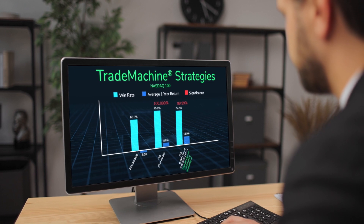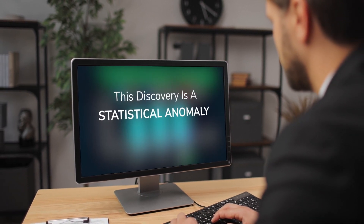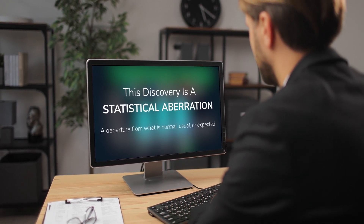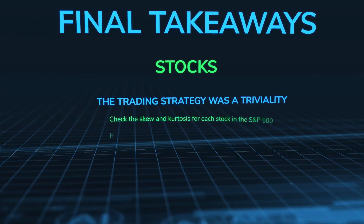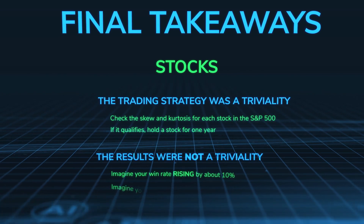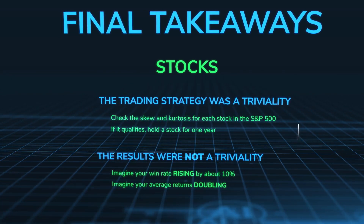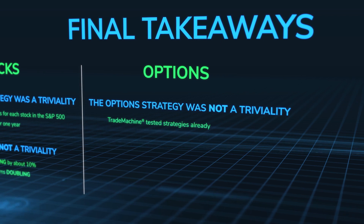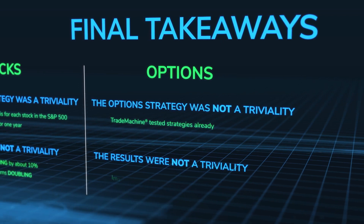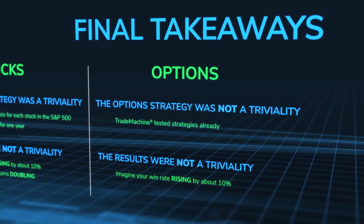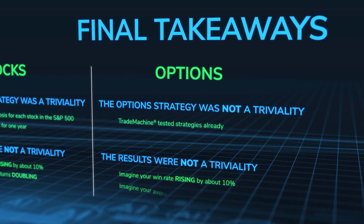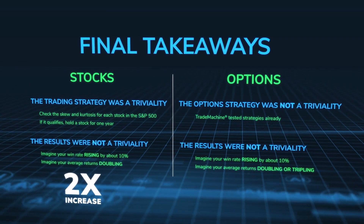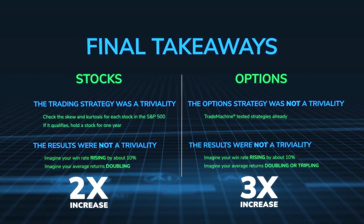This is the second time in my 25-year career that I've seen what can be called a statistical anomaly — or even an aberration, a departure from what is normal, usual, or expected. The stock trading strategy was a triviality that could certainly be improved; the results were not a triviality. The Trade Machine tested strategies were also not a triviality. On your option trades, imagine win rates rising by about 10% with 99% statistical significance, and average returns doubling or tripling — that's the option takeaway, a doubling or tripling over the long arc of trades.